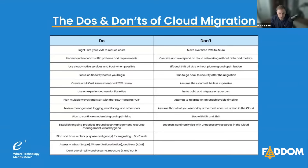Use cloud-native services and paths when possible. Get things out of your environment — get it as a service, get it out on the internet. Don't host it if you don't need to. If you can move your Exchange to Microsoft 365, then do that. It gives you fewer resources to maintain and pay for in the cloud.